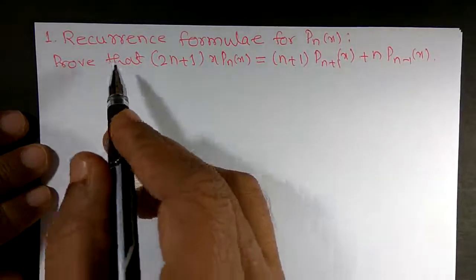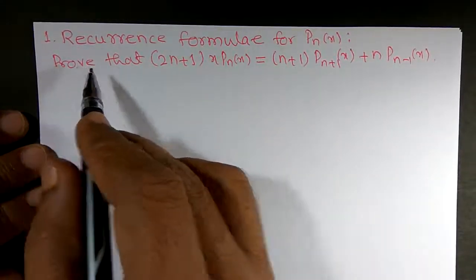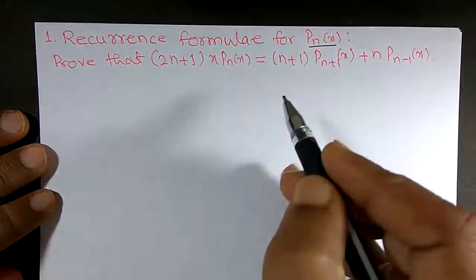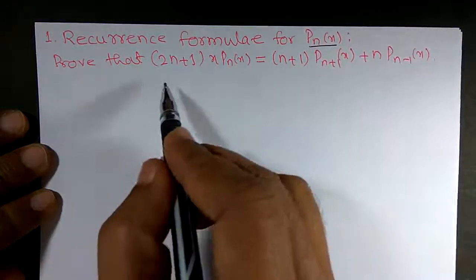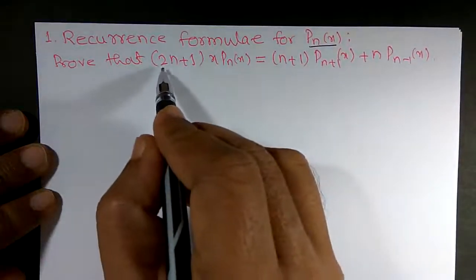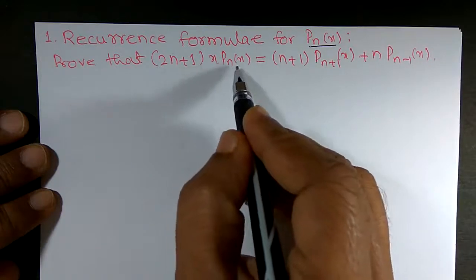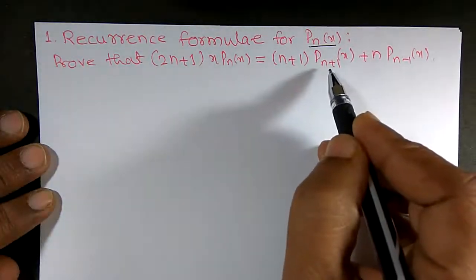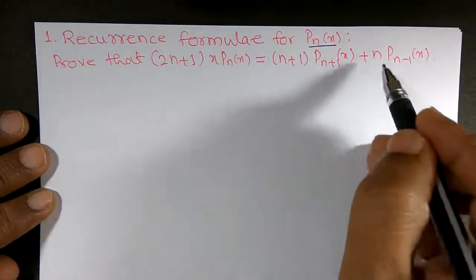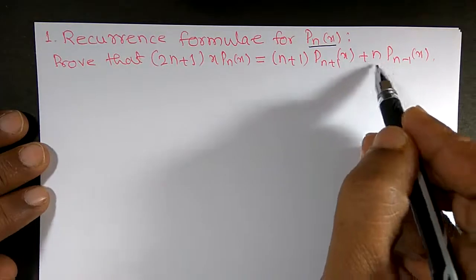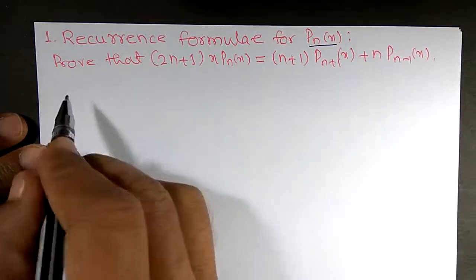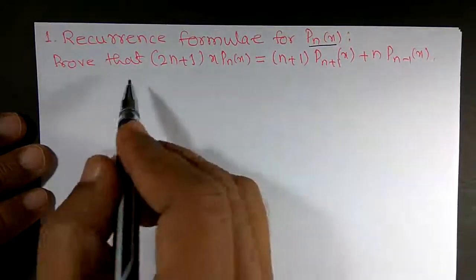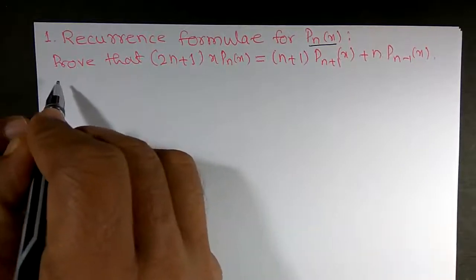Hello friends. We want to prove a recurrence formula for the Legendre polynomial Pₙ(x), namely: (2n+1)·x·Pₙ(x) = (n+1)·Pₙ₊₁(x) + n·Pₙ₋₁(x). We can prove this result by using a generating function.